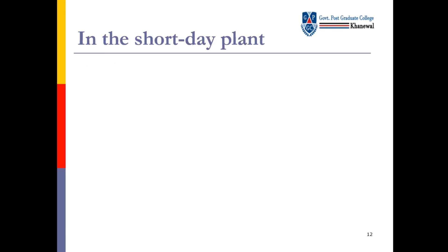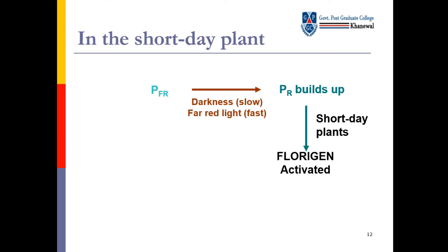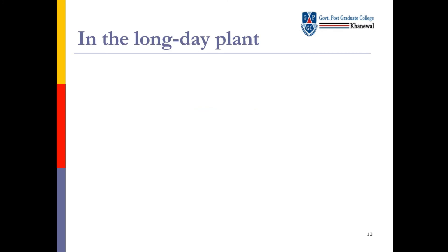In the short day plant: PFR darkness — slow; far red light — fast. Then PR builds up — PR کی synthesis start ہو جائے گی. Short day plants کے اندر florigen activate ہو جائے گا اور یہ flowering show کر دے گا.